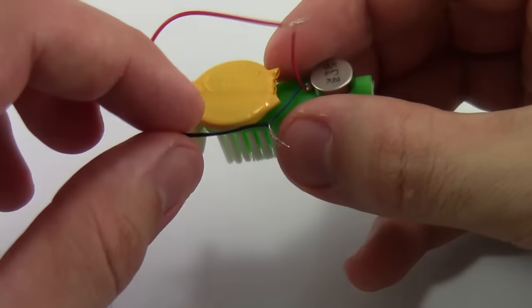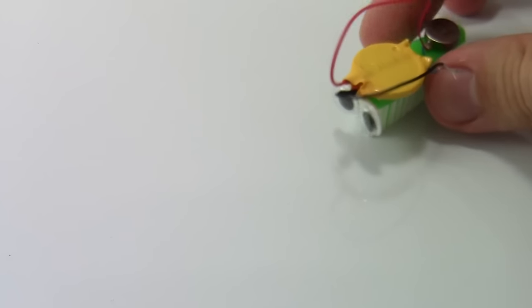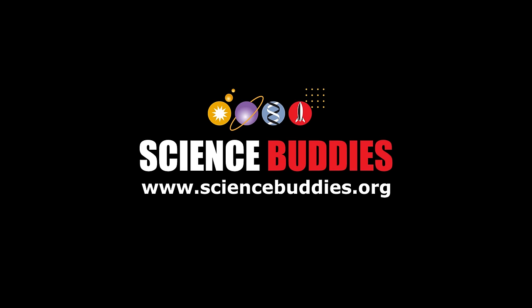To turn your robot off, just disconnect one of the wires. Have fun playing with your brand new Bristlebot. For directions for this and thousands of other science and engineering projects, visit us online at www.sciencebuddies.org.